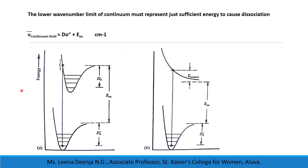If there is an electronic transition where the molecule jumps to a level above the dissociation limit, then the spectrum of the system consists of some vibrational transitions followed by a continuum. The lower wavenumber limit of this continuum must represent just sufficient energy to cause dissociation — that is, the dissociation products separate with virtually zero kinetic energy. Thus, we have nu-bar of that starting point of the continuum equal to D₀ double-dash plus E_excitation, in units of cm⁻¹.